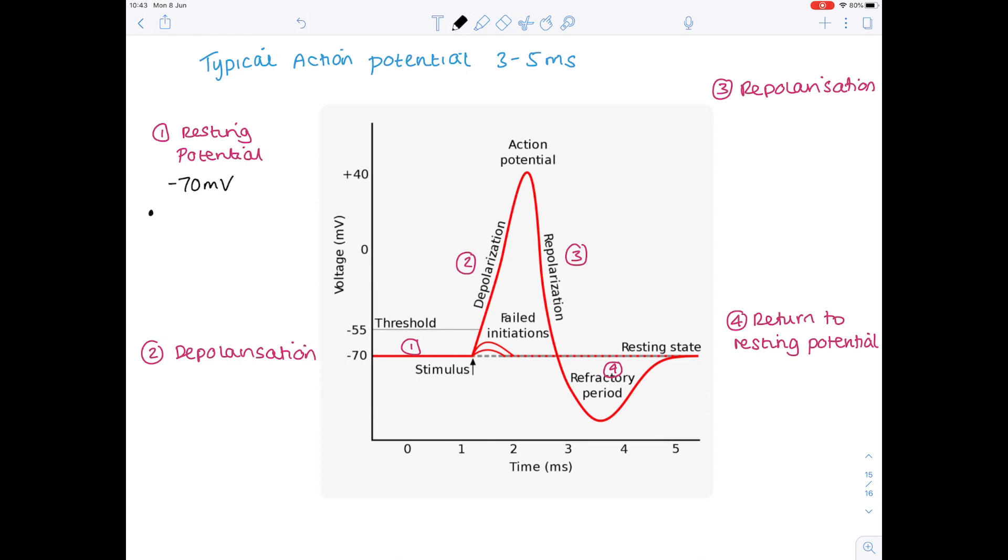This rises to a threshold potential of minus 50mV due to local current. The next stage is depolarisation, so we can see this huge spike up here, and that's because the sodium ion channels open and sodium ions move into the neuron.